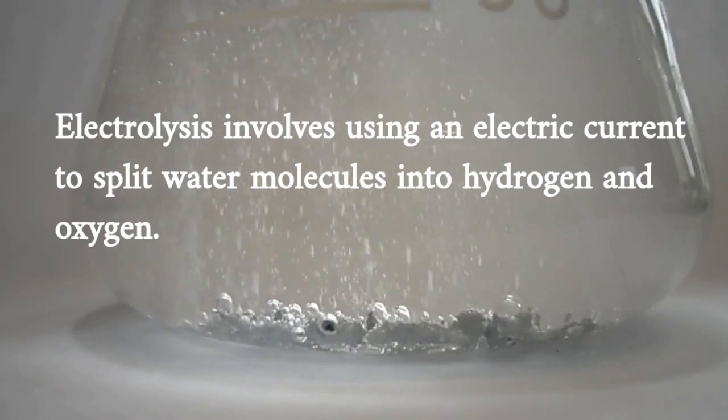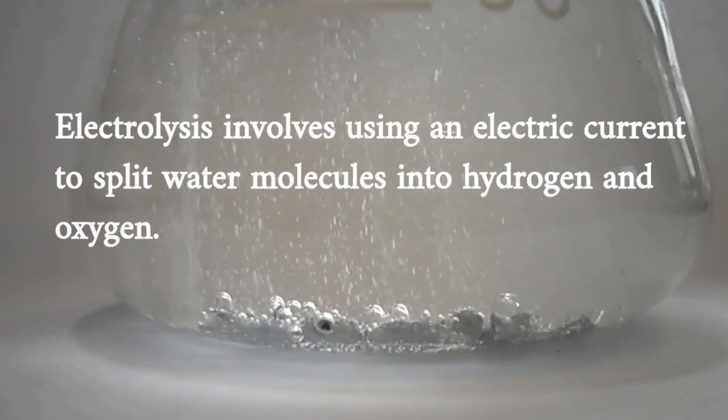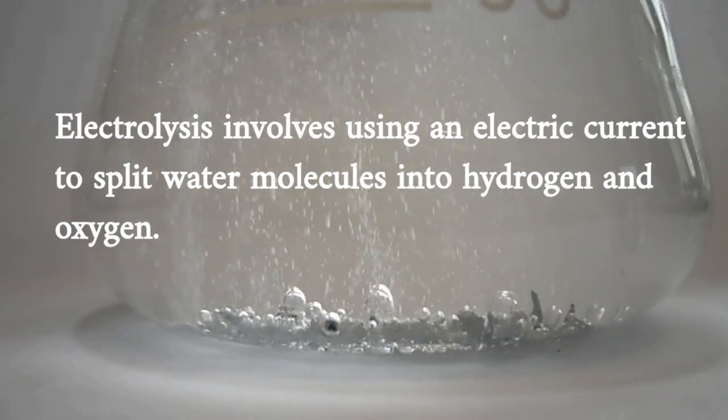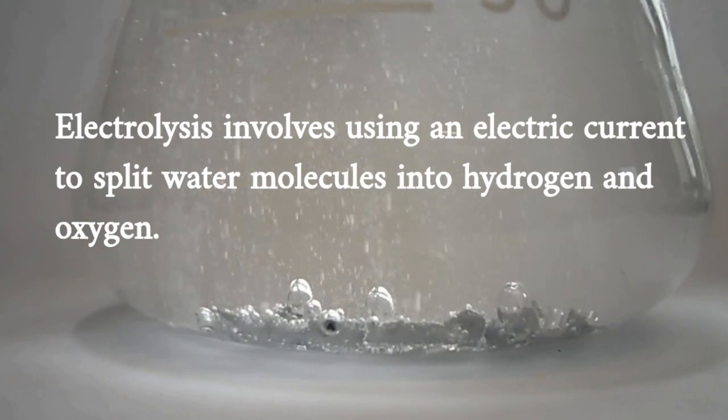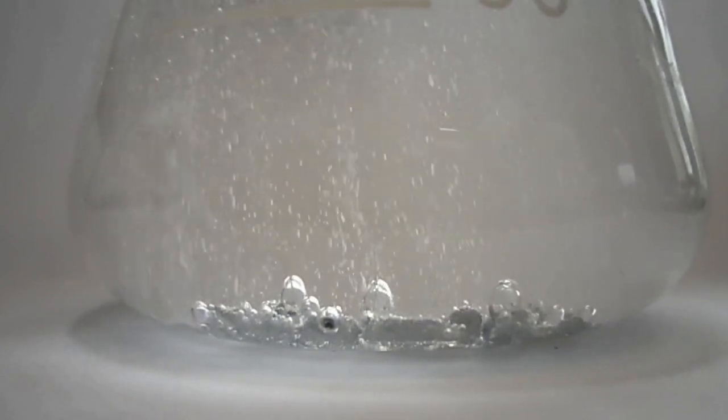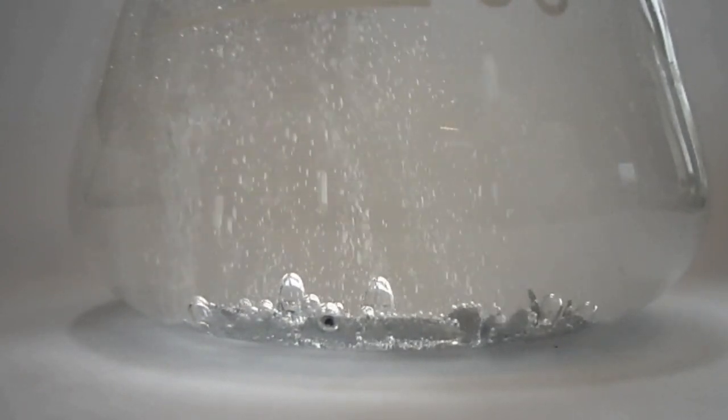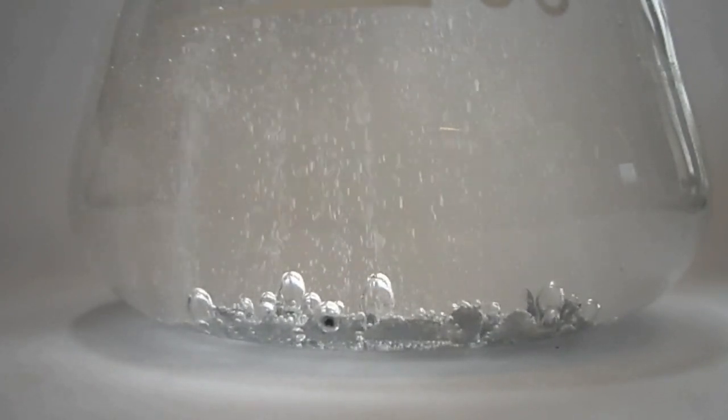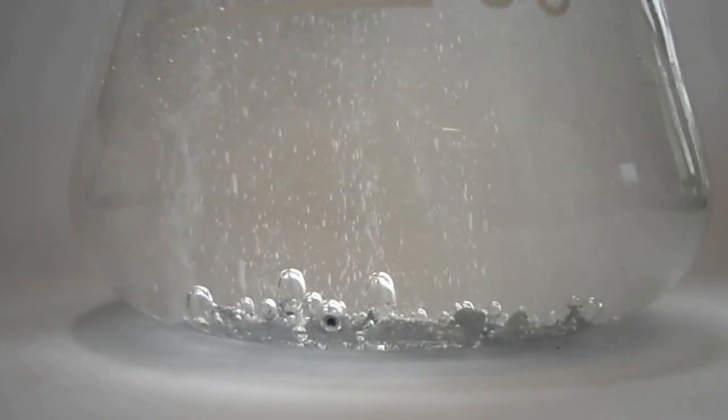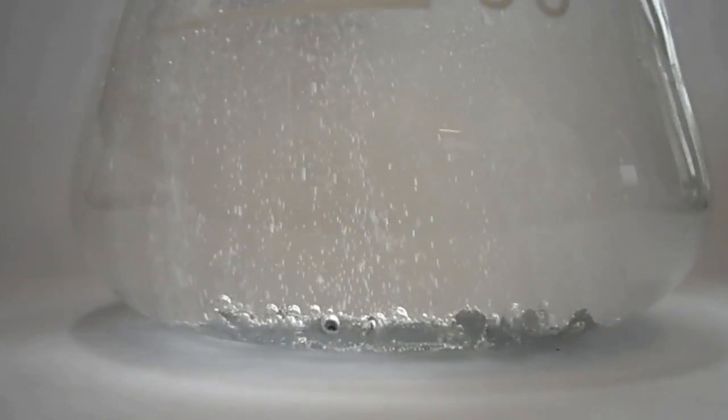Electrolysis involves using an electric current to split water molecules into hydrogen and oxygen. This process requires a source of electricity and a suitable electrolyte such as potassium hydroxide or sodium hydroxide. The electric current passes through the electrolyte, causing the water molecules to break apart into hydrogen and oxygen. The hydrogen gas is then collected and purified for use.